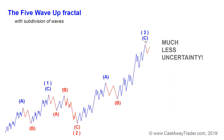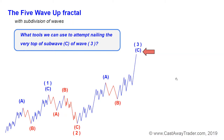The more details we get of that 5-wave-up fractal, the more confident we can be about its continuation. If that is the top of sub-wave C of wave 3, we may expect a corrective ABC-down in wave 4, followed by another push higher in wave 5-up to make a new higher high. The more details we get, the more confident we get, the more trades we can make with high probability. But the classic Elliott wave theory miserably fails when it comes to nailing the very top of sub-wave C or wave 3-up — it simply doesn't have enough tools.